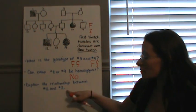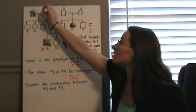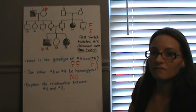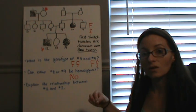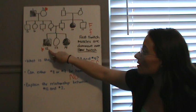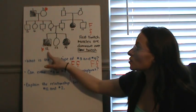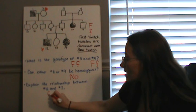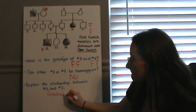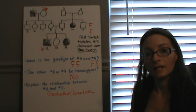Lastly, explain the relationship between numbers 12 and 2. Number 12 is right here and number 2 is up here. First of all, number 2 is a female and number 12 is a male. There are two generations between them. Following back through, number 12 has parents 8 and 9, and 8 is the daughter of number 2. So number 12 would be the grandson and number 2 would be the grandmother — grandmother and grandson would be the relationship.